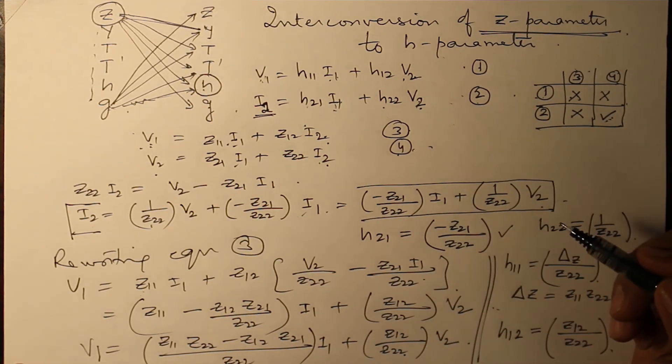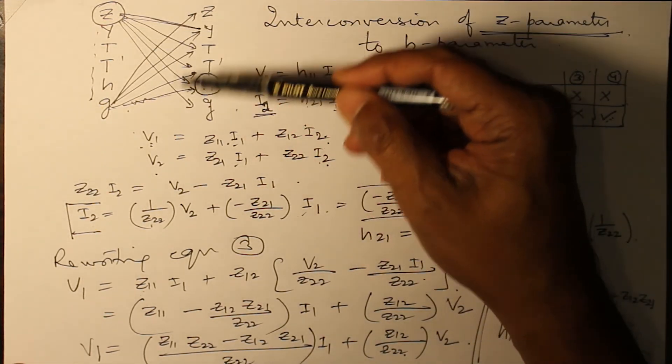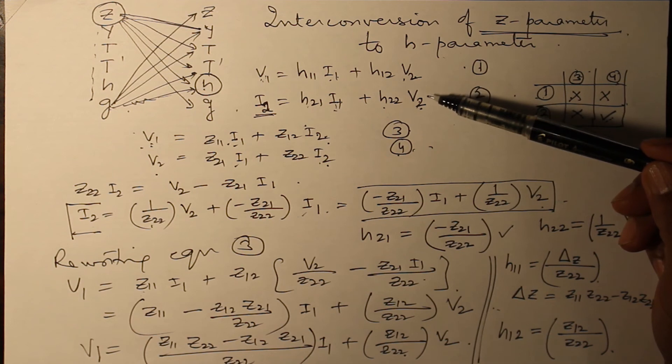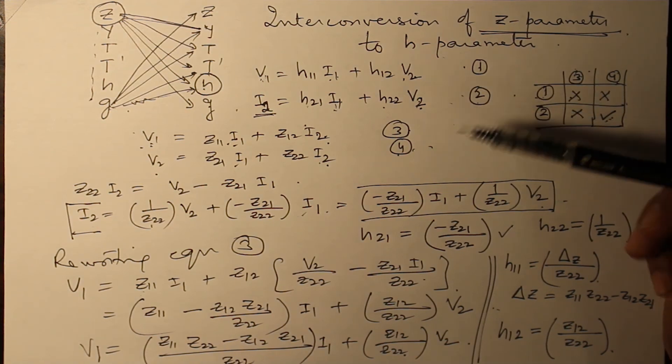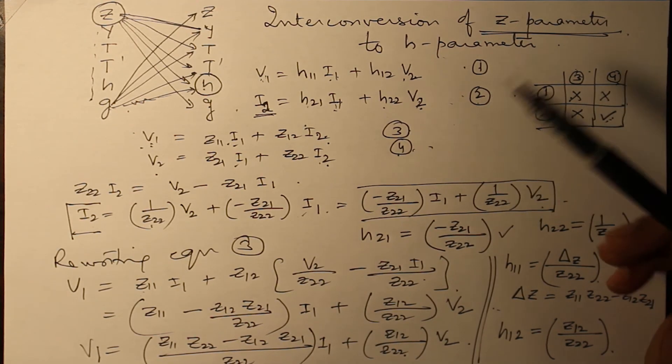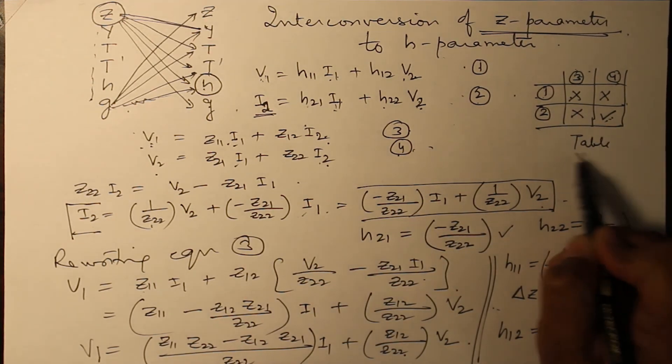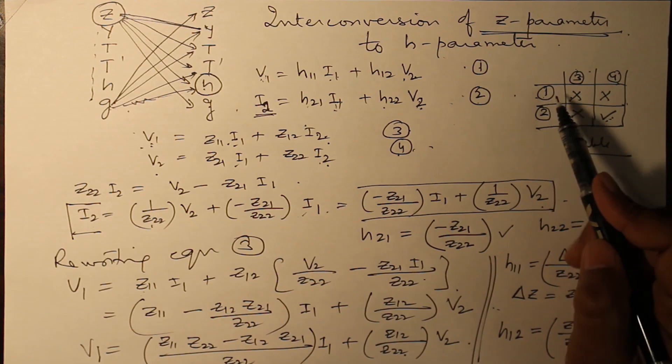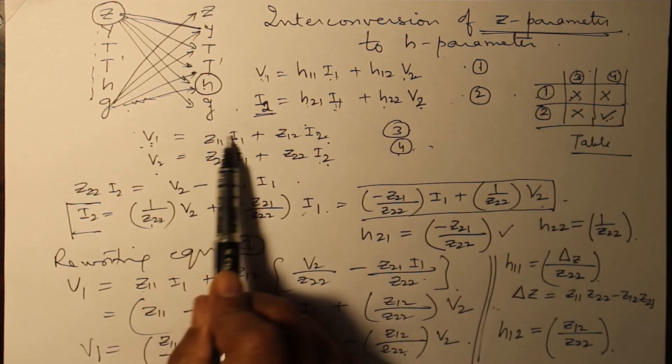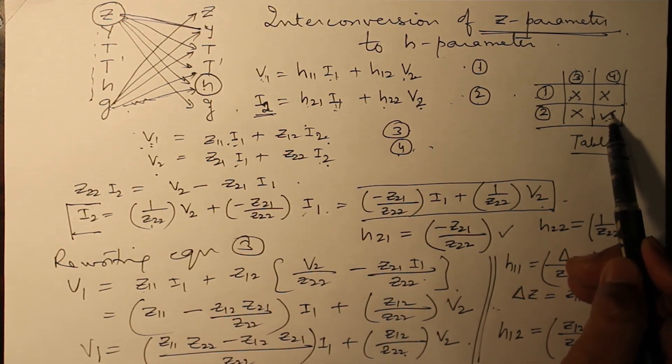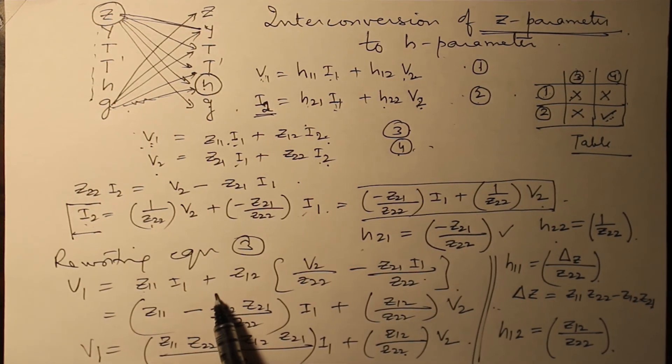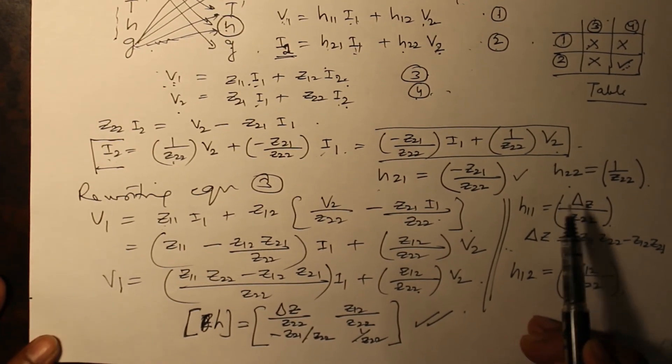In this way, you can find out any of these parameters in terms of the other. Basic step remains same: whatever you want to find out, write it as one and two. Whichever equations are given, Z parameter here, write down as three and four. Make a small table and in this table compare the quantities of these equations, variables V1, I1, V2, I2. Wherever it's common, first find out those two parameters.